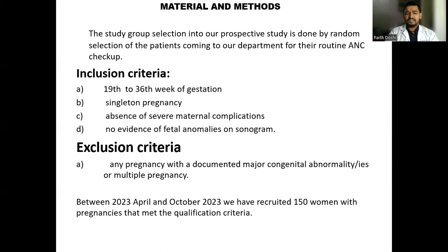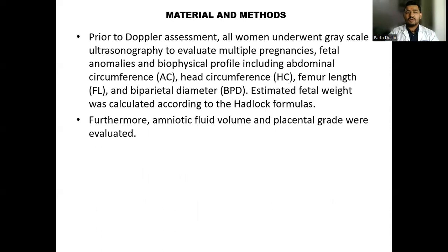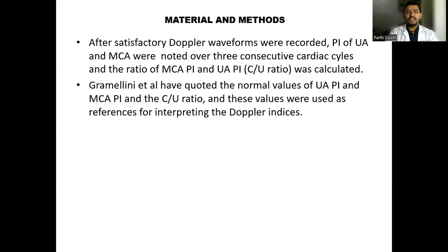This study was conducted between April 2023 to October 2023. We recruited 150 women with pregnancy that met our inclusion criteria. Prior to Doppler assessment, all women underwent grayscale ultrasonography to evaluate multiple pregnancy, fetal anomalies, and biophysical profile including AC, FL, and BPD as per Hadlock formula. After satisfactory Doppler waveforms were recorded, PI of umbilical artery and MCA were noted over three consecutive cardiac cycles and the ratio of MCA PI to umbilical PI was calculated.